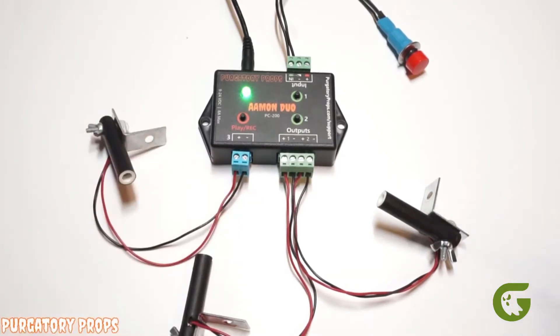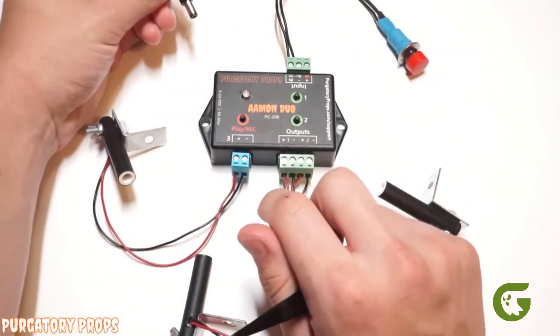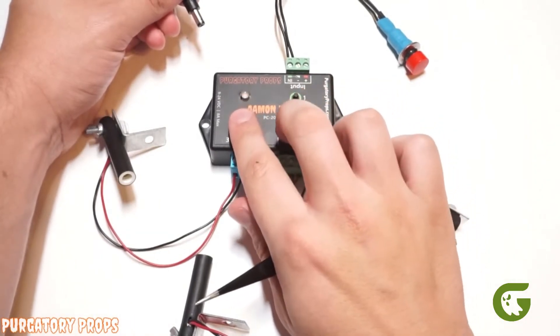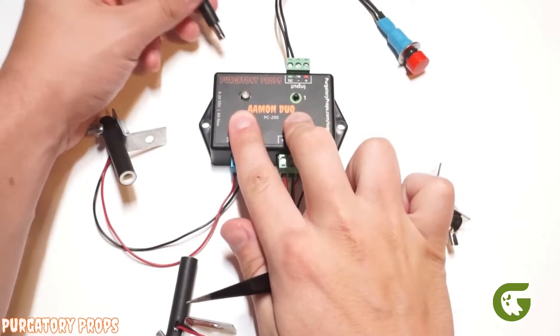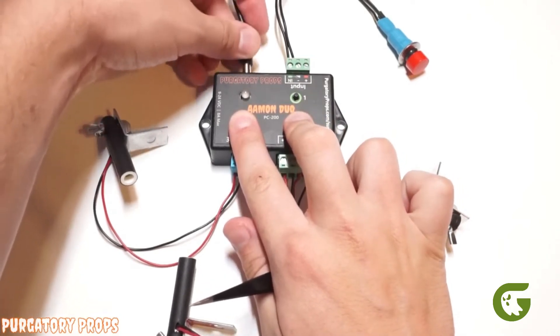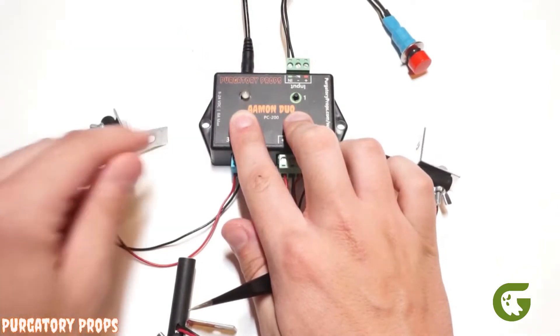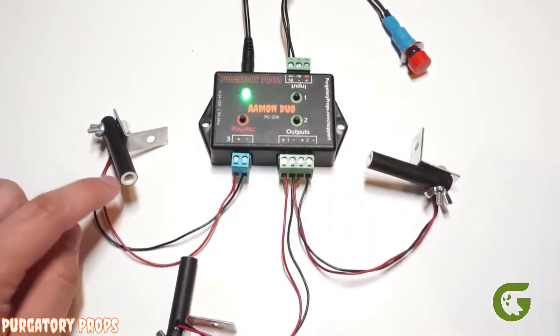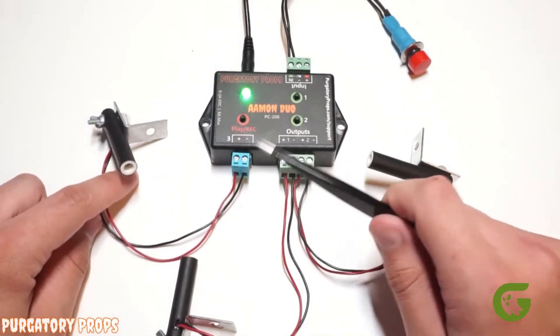So this has a couple of different modes. If we unplug the Amon Duo and then if we hold the play record button and the output 2 button and then we plug back in the Amon Duo, the light will flash blue. We'll keep holding and that turns red and we can release. So now this is set output 3 into start mode.